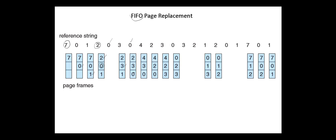Next zero — page one is chosen as a victim. Next four — page two is chosen as a victim. And we continue in the same manner. According to the first-in-first-out page replacement, the number of page faults is 15.